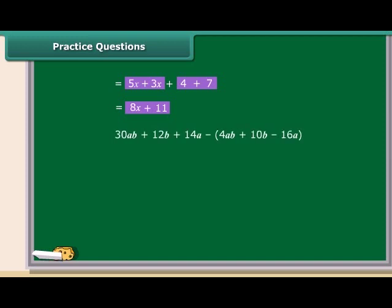Now, the question is to subtract 4ab plus 10b minus 16a from 30ab plus 12b plus 14a. We have to use the same criteria as we have used for the addition. Bring the like terms together, taking into consideration the sign of the terms. So on rearranging, we get 26ab plus 2b plus 30a.